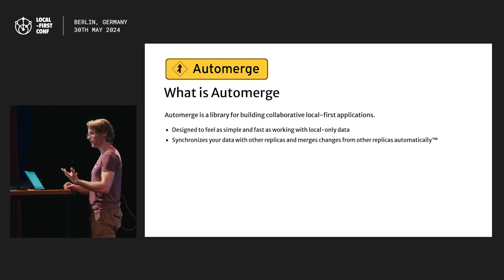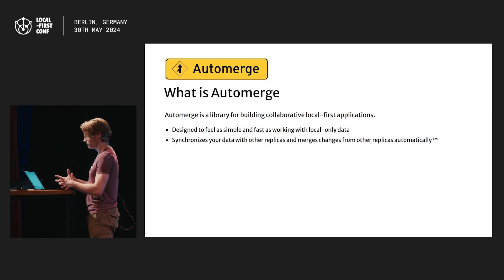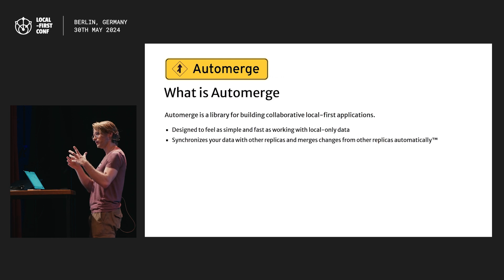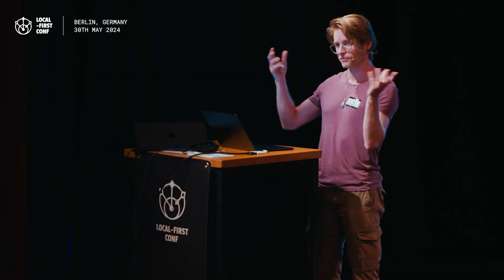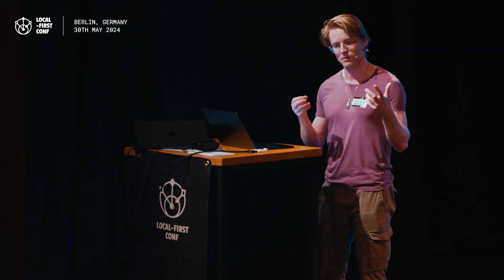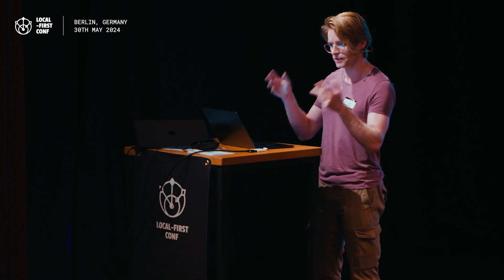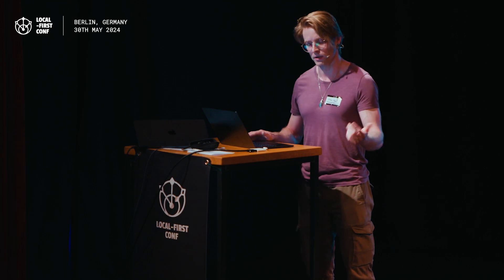I'm going to talk about that by talking about what we do with plain text in Automerge. The structure of this is going to be: I'm going to introduce plain text and what plain text in Automerge looks like, how collaboration with it works, then I'm going to digress for a bit about collaboration, then I'm going to talk about the rich text feature we built, and then finish by talking more about collaboration.